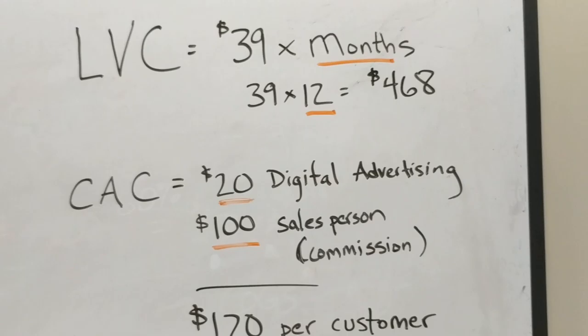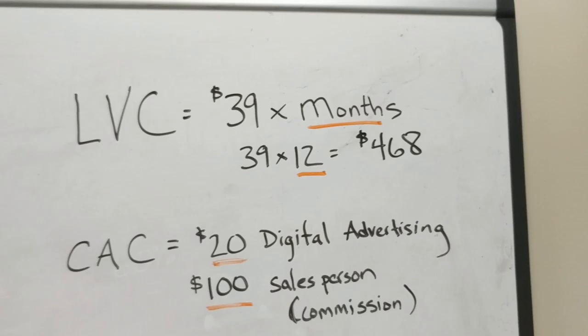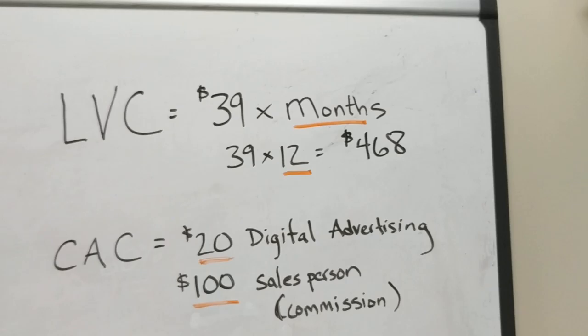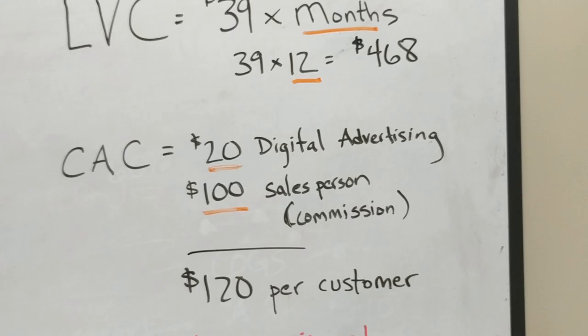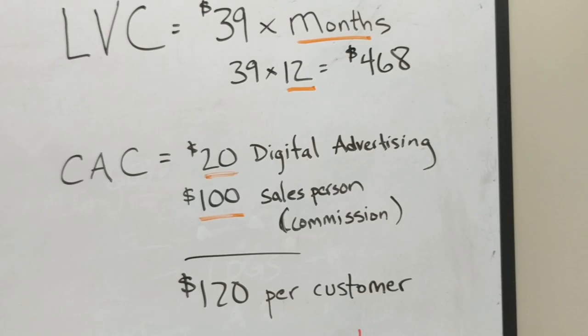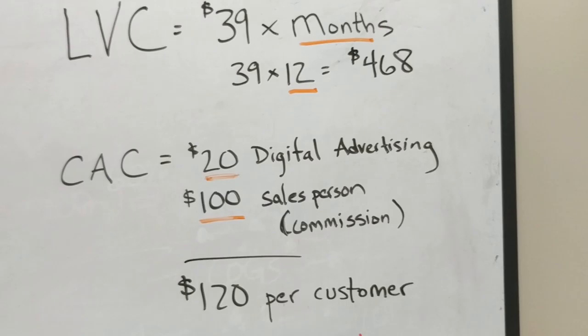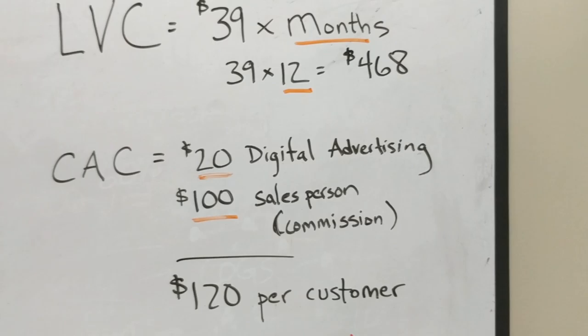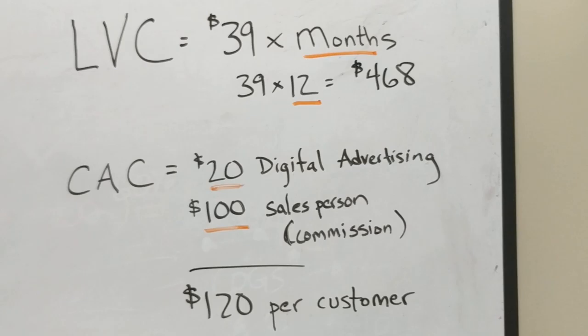For the cost of acquiring a customer — and my assumptions are underlined in orange here — each customer I'm going to spend about $20 on digital advertising, and then I'm going to pay a salesperson $100 on a commission-based system. So each sale the salesperson makes, I pay $100. That gives a cost of acquiring a customer of $120. Now, is $120 good or bad? It depends on the lifetime value. With a high lifetime value of $468, it's fine to spend $120 per customer. But if my lifetime value were only $90, I'd be in a lot of trouble paying $120 to get them.